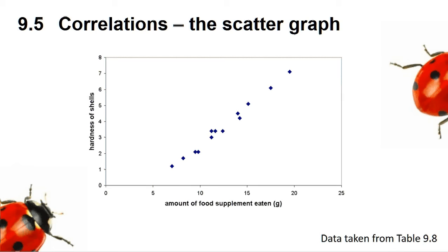Here, it looks highly likely that the shell hardness is related to how much supplement is eaten. However, many other biological and environmental factors can affect the trait we are interested in, and it would be difficult to be sure there is a relationship with so much noise about. You can see these points do not form a perfect straight line. This is where we can use the Spearman's Rank Correlation and the Pearson's Product Moment Correlation to give an indication whether the relationship you see is real.